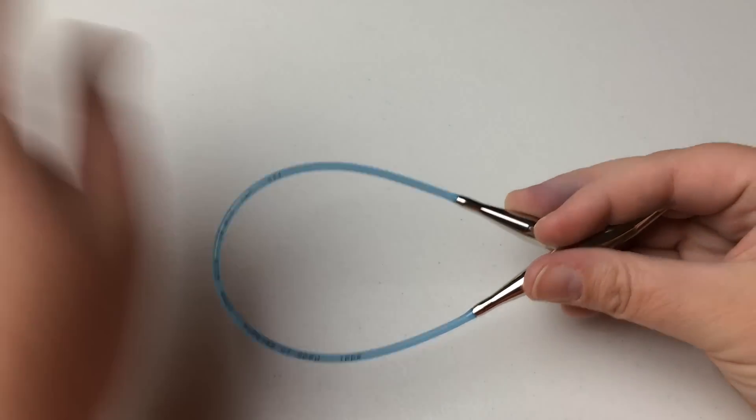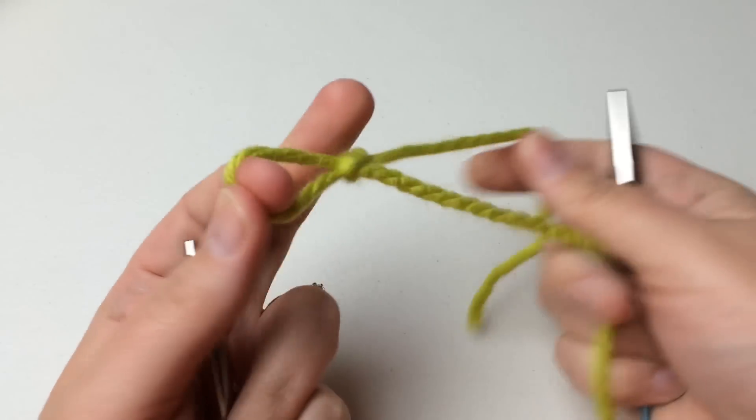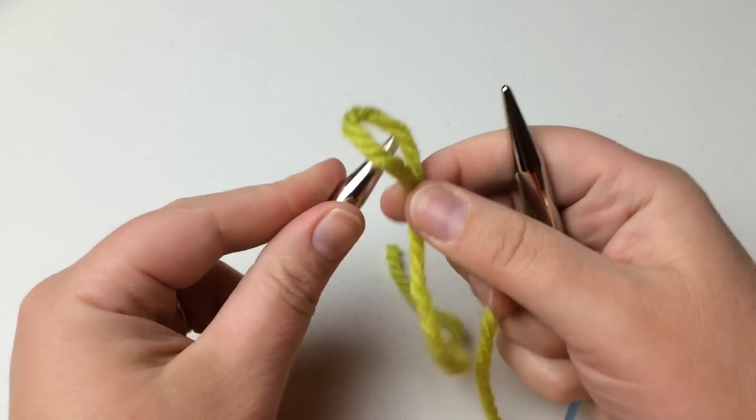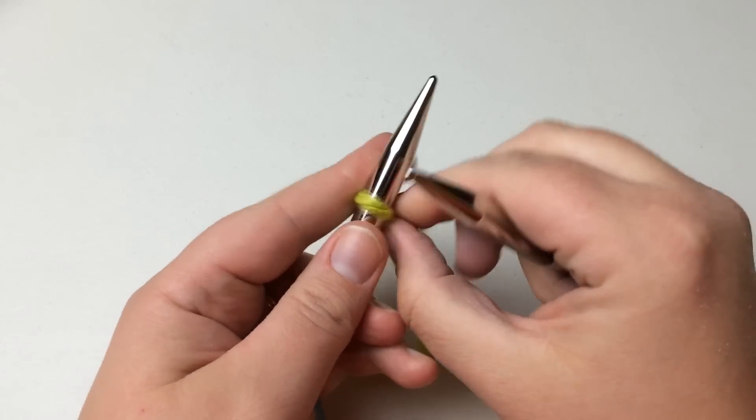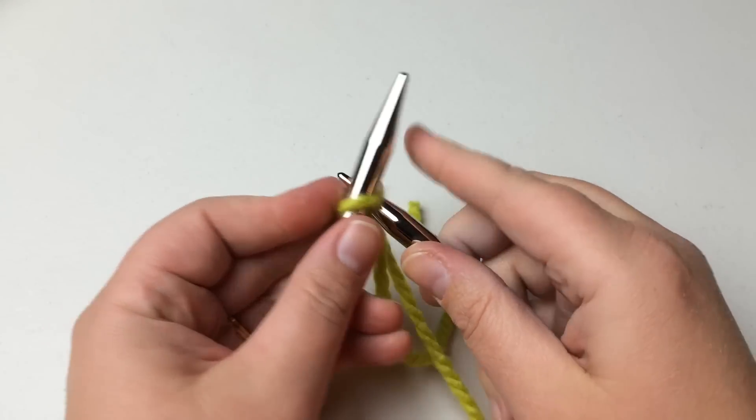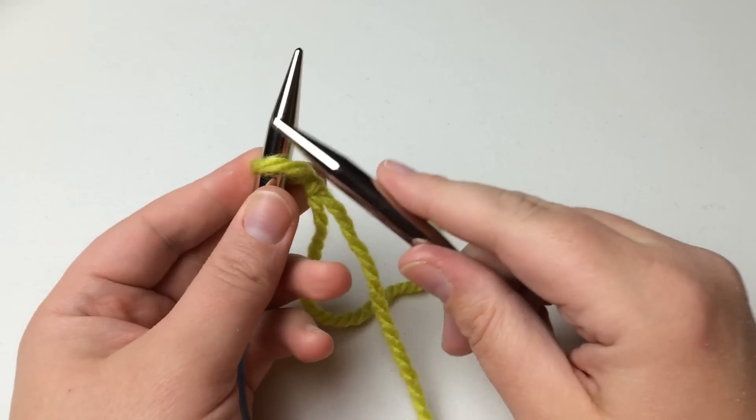So let's set this aside. All right let's start with a slip knot. And if you have seen my knit cast on video, this beginning is going to be similar. Go ahead and put your slip knot on your left needle.